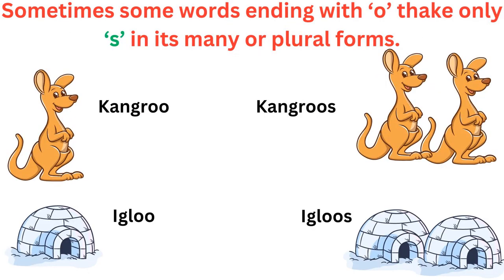Sometimes some words ending with O take only S in their plural forms. Kuch words aise hote hain jab O ho toh S hi lagta hai. For example, kangaroo — kangaroo ka kya ho jayega? Kangaroos. Yahan pe hum ES nahi, only S lagayenge. Kuch exceptional words hain jahan pe hum only S lagate hain. Igloo — igloo ka kya ho jayega? Igloos. Not ES, it's S.